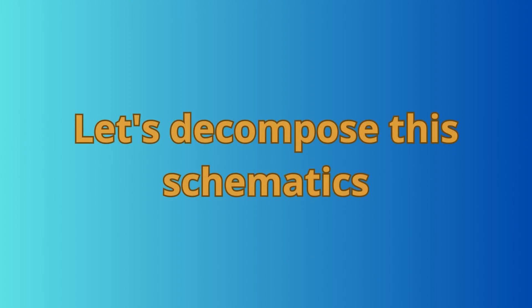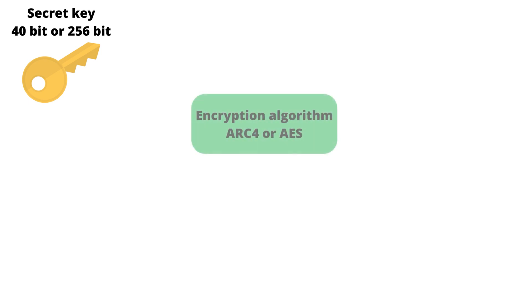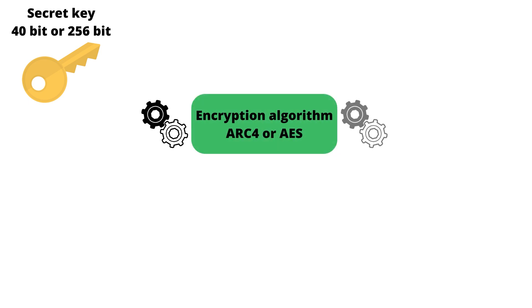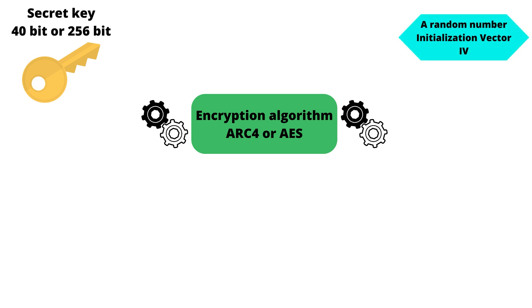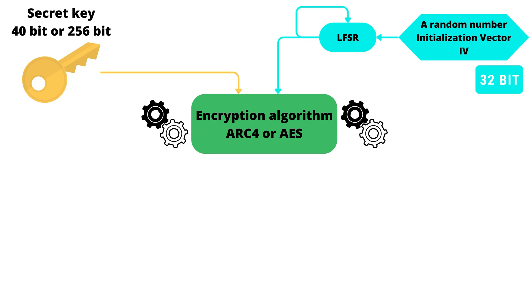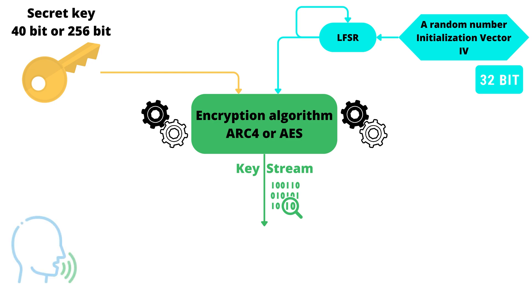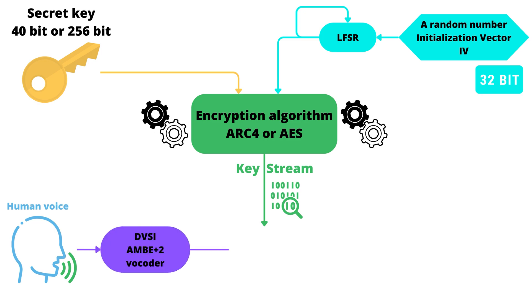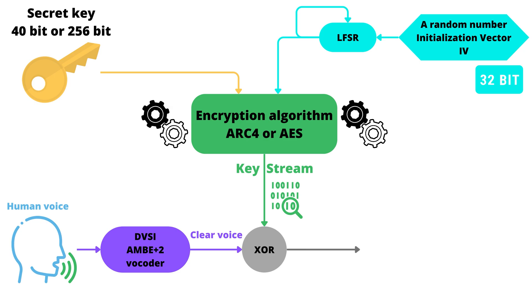Now let's decompose this schematic. First, the secret key — the secret key is 40-bit or 256-bit. An encryption algorithm, which could be ARC4 or AES. And a random number which should be a 32-bit number — this is the IV. Insert the secret key inside the encryption algorithm. Insert the initialization vector over the LFSR inside the encryption algorithm. Mix this to obtain a keystream — this is a bit field. Now encode the human voice by using the vocoder, the DVSE, DVSI, and AMBE+2 vocoder. Mix the keystream and the clear voice by using an XOR, exclusive OR, and you will obtain the encrypted voice sent over the air. Add the IVs generated from the LFSR — the linear feedback shift register.